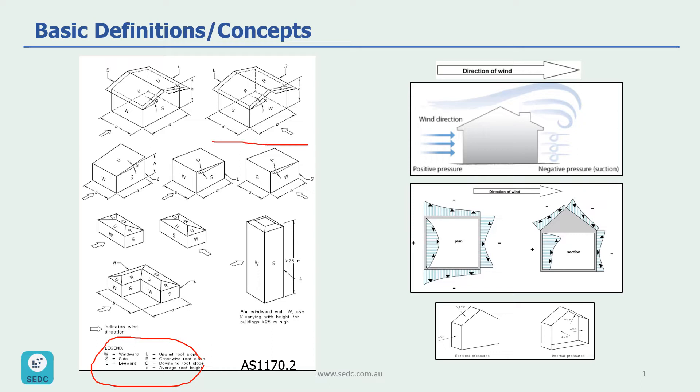Let's look at one example here to understand these legends. If our wind is in this direction, this side of the wall is called the windward wall. The other side of the wall is called the leeward wall, and the two other walls are called side walls.